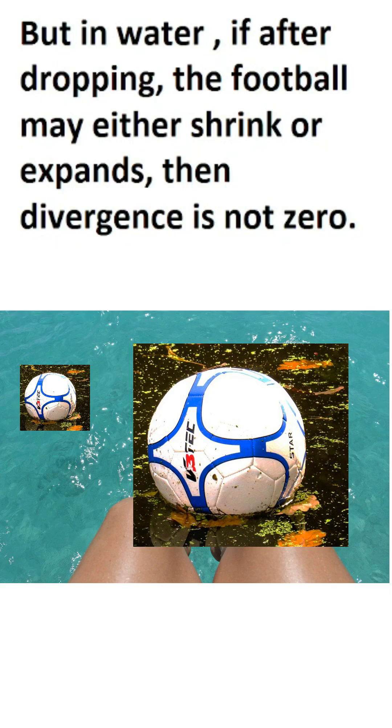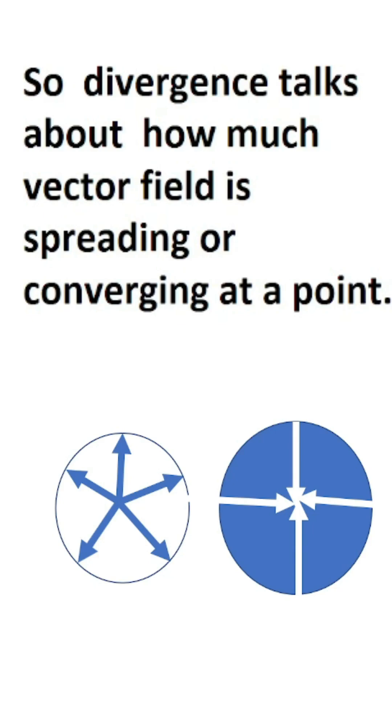But in water if after dropping the football may either shrink or expand, then divergence is not zero. So divergence talks about how much vector field is spreading or converging at a point.